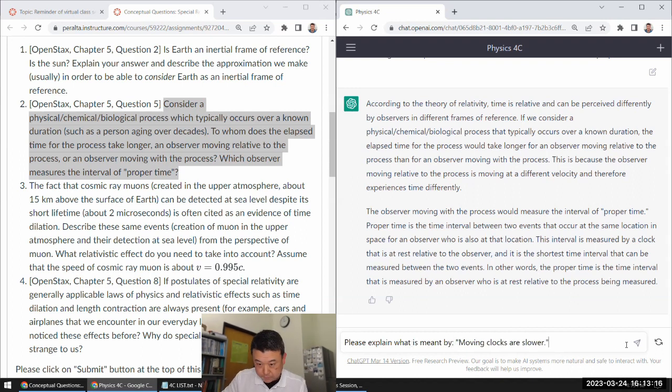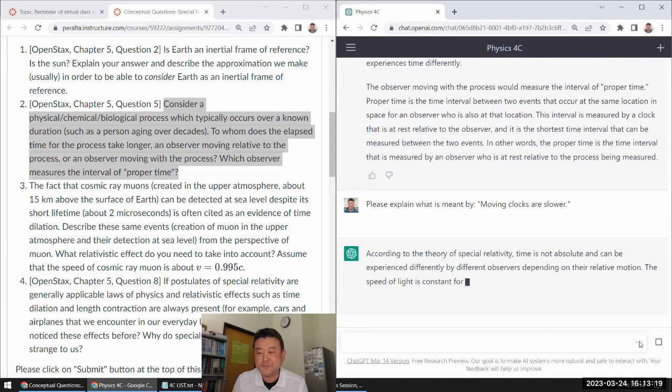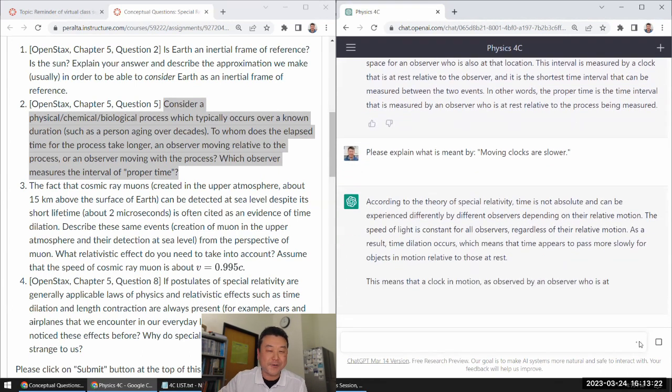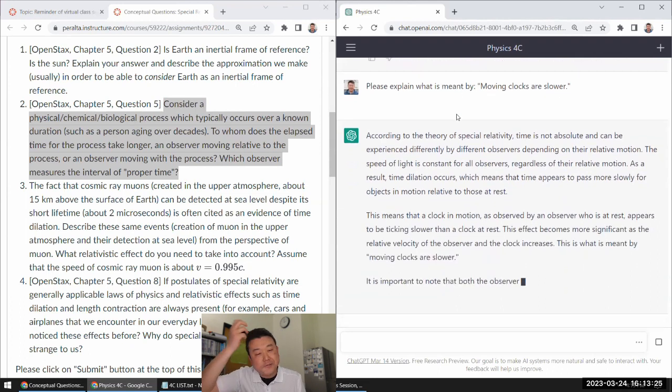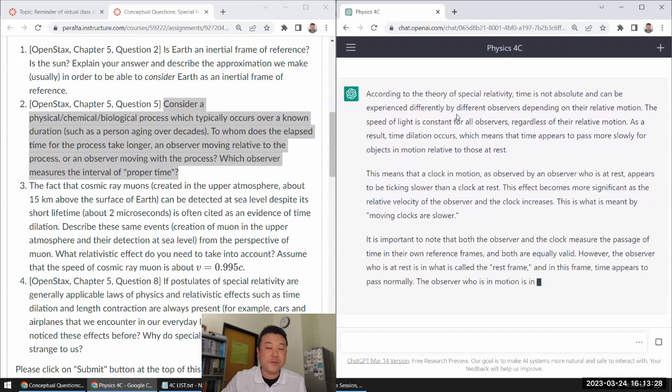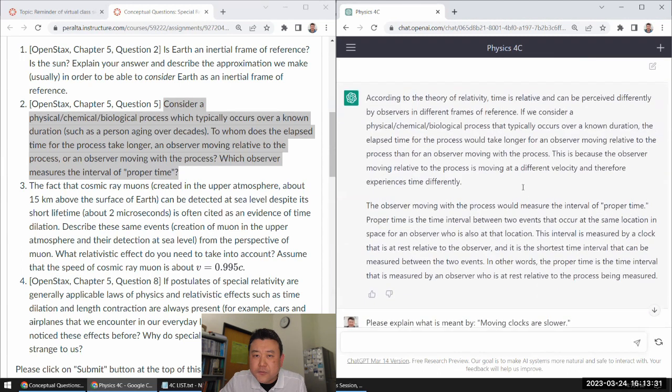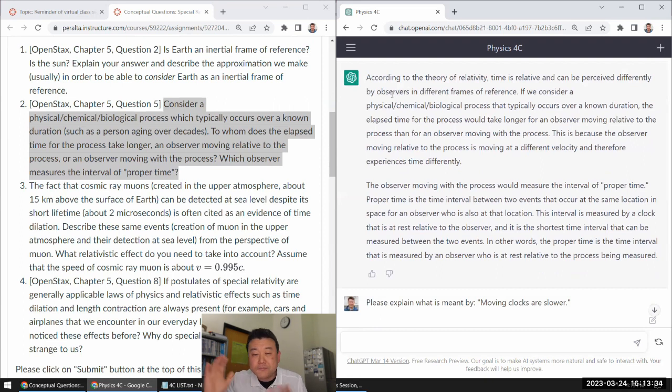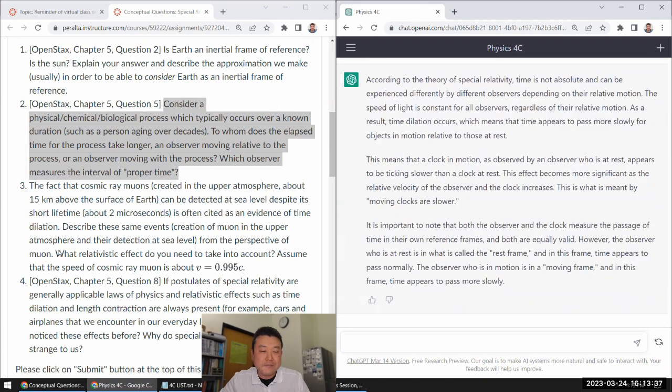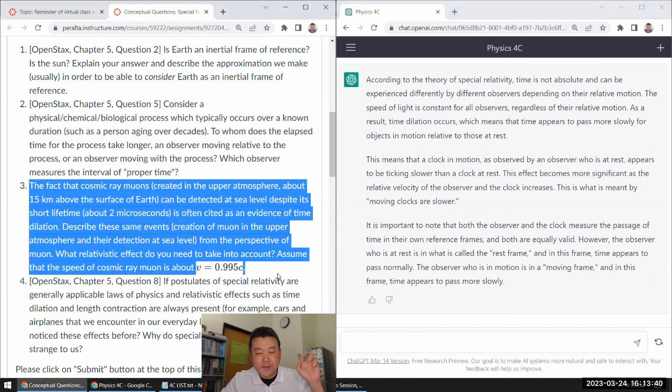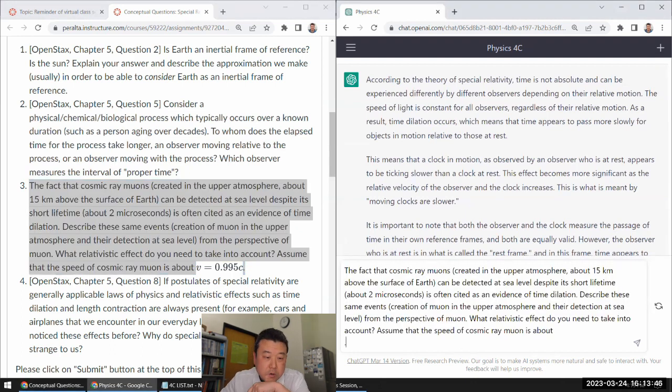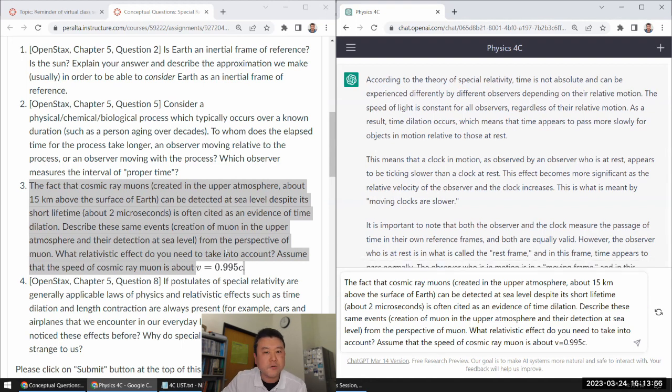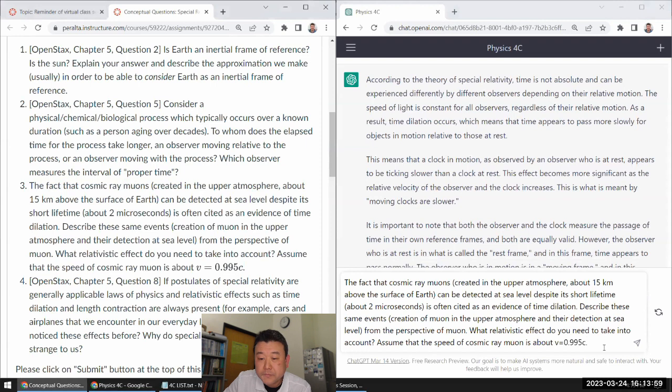Please explain what is meant by moving clocks are slower. Yeah, so anyways, I just wanted to put that into record. ChatGPT's answer is correct. I guess the only improvement one could make is I don't think it actually mentioned the phrase time dilation. If it mentioned it, that would have been better, but yeah, that answer is fine. There's no red flag or things I would point out as wrong. Let me just copy and paste this in. Cosmic ray muon is about, I have to do this manually, V equals 0.995C, because the equation doesn't paste correctly. I'm going to actually read the question.